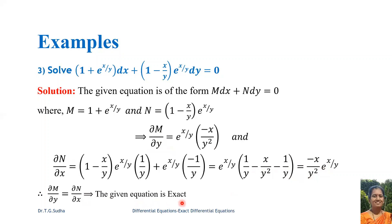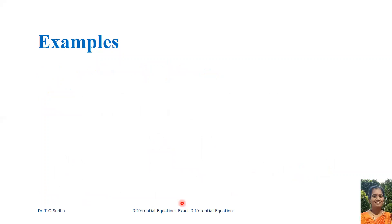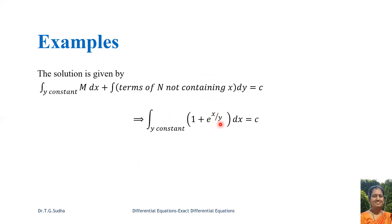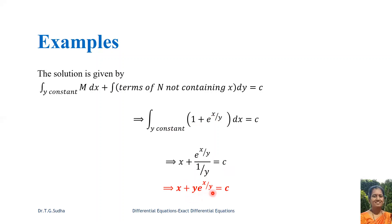Now let us find the solution to the exact equation. The solution is integral M dx keeping y constant, plus integral of terms of N not containing x, times dy, equal to c. Since all terms of N contain x, there is no second integral. Integrating M equals 1 plus e^(x/y) with respect to x, keeping y constant: 1 dx gives x, and e^(x/y) divided by 1/y gives y·e^(x/y), equal to c. Bringing y to the numerator, the solution is x plus y·e^(x/y) equal to c.